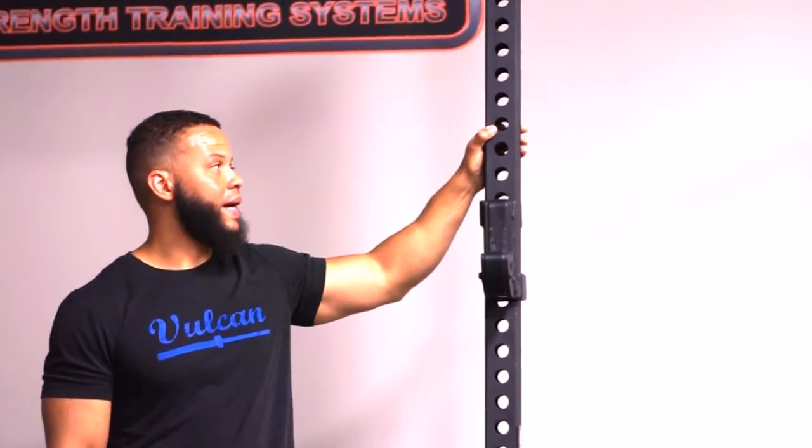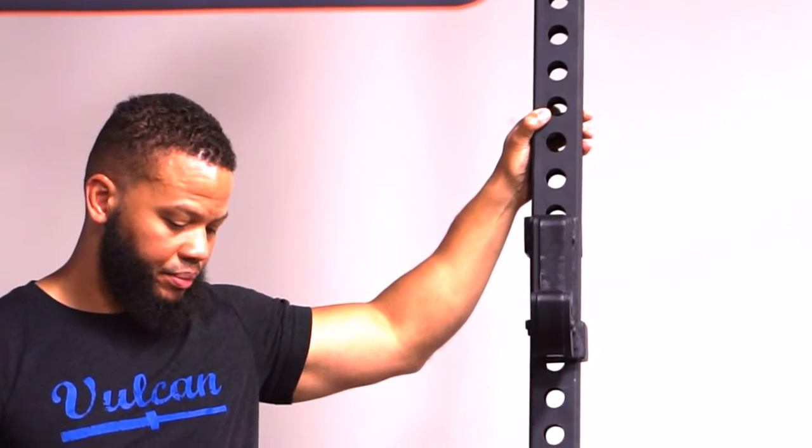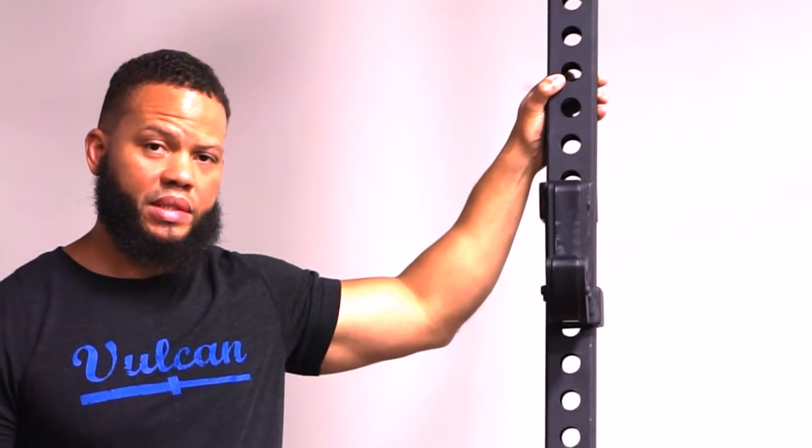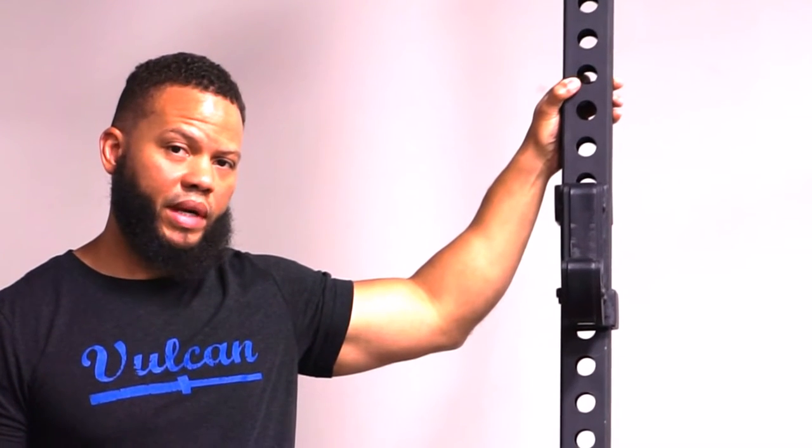Two and a half by two and a half inch uprights and this is 8 gauge steel which is very thick, very heavy gauge steel. The net weight of the squat stand is around 260 pounds, so it's quite substantial.